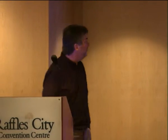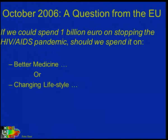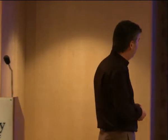In 2006, the European Union posed the following question: if we could spend 1 billion Euro on stopping the HIV/AIDS epidemic, should we spend it on creating better medicine or on changing lifestyle? This is a baffling question because it spans from molecular medicine — discovering molecules with certain interactions, considering toxicity — all the way to lifestyle questions like whether people have safe sex, or studying mobility patterns in the case of influenza. It really goes across all scales.